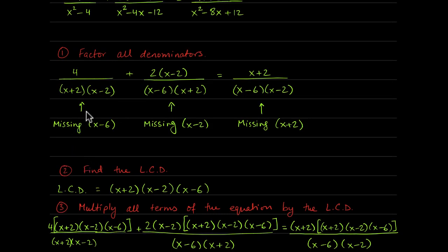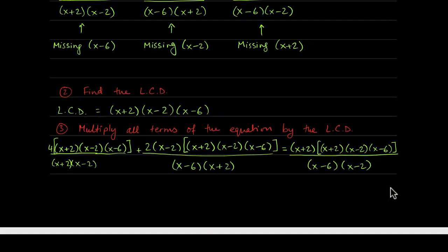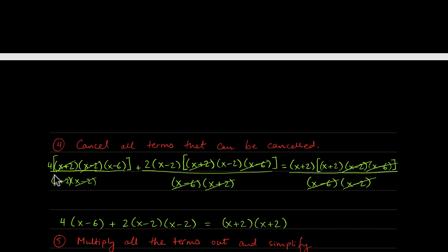Finding the LCD: the first denominator has x plus 2 and x minus 2 but is missing x minus 6; the second is missing x minus 2; the third is missing x plus 2. So the LCD is x plus 2 times x minus 2 times x minus 6. Multiplying all terms by the LCD and then canceling: x plus 2 cancels with x plus 2, x minus 2 with x minus 2, x plus 2 with x plus 2, x minus 6 with x minus 6, x minus 2 with x minus 2, and x minus 6 with x minus 6.